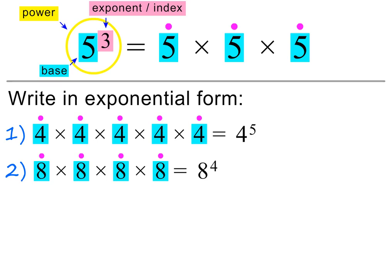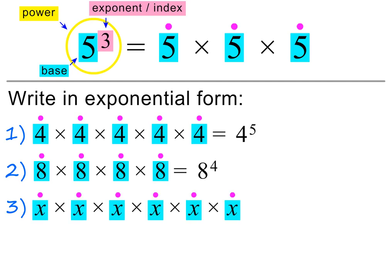How did you do? Here is the next example — please pause and try it on your own first. Here x is being multiplied by itself 6 times, so the exponential form is x to the power of 6.